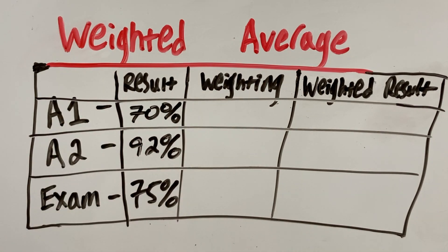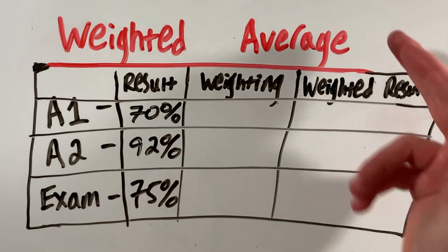However, these three tests have different weightings, so it's not as simple as adding the three up and dividing by three. You can't just take the average. Instead, we have to take the weighted average.